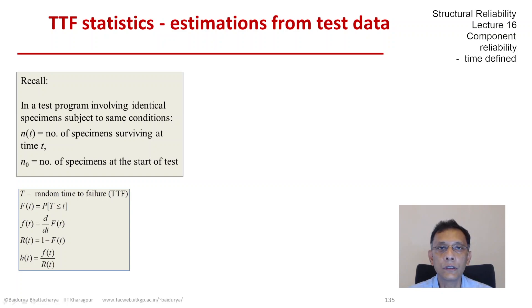And the hazard function, which is the last item that we learned, is the ratio of the density function with the reliability function. So we had estimates for all of them.